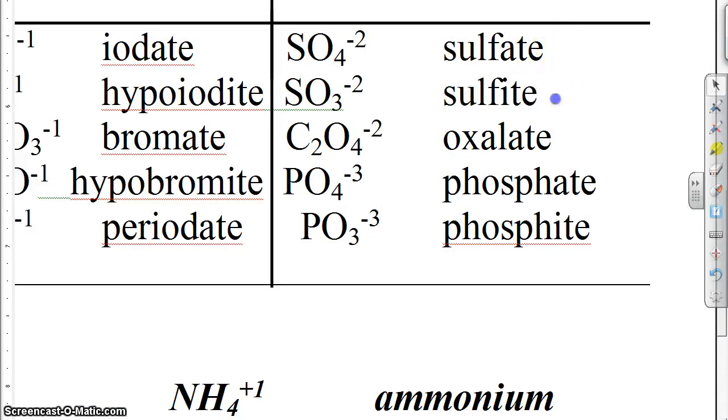Sulfate and sulfite, the classic 8-ite ions. So like always you learn the 8, learn sulfate is SO4 minus 2.